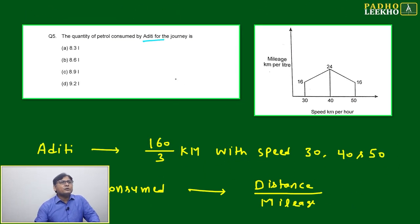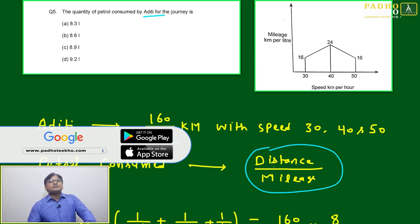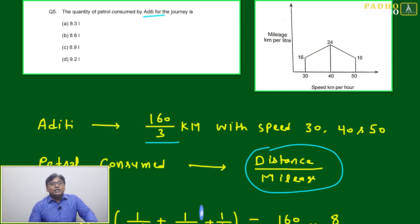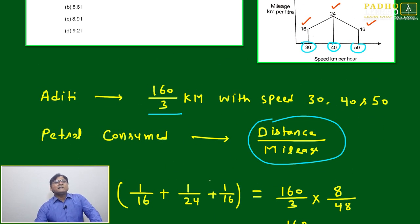The question is: the quantity of petrol consumed by Aditi for the journey. For Aditi, it's 160 kilometer by 3 with speed 30, 40, and 50. Total petrol consumed will be total distance divided by mileage. That will be your petrol consumed. The issue is total distance we know, but mileage is not fixed because she is going with different speeds - 30, 40, and 50. For every speed she will get different mileage. Mileage is here 16, 24, and 16. Then one part, like 160 by 3, we can say 160 by 3 divided by mileage will give you the petrol consumption. One part: 160 by 3 divided by speed 30 kilometer per hour, that will give you the petrol consumption during the distance covered 160 by 3.